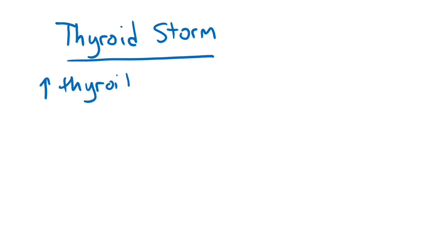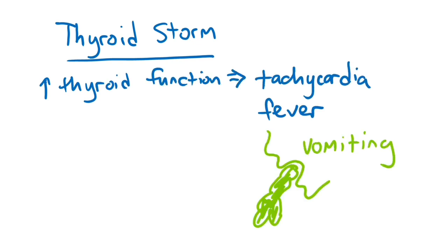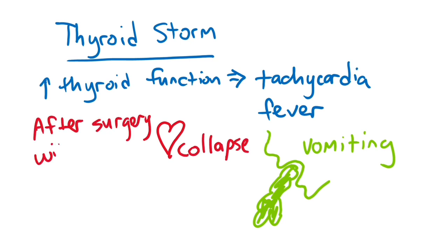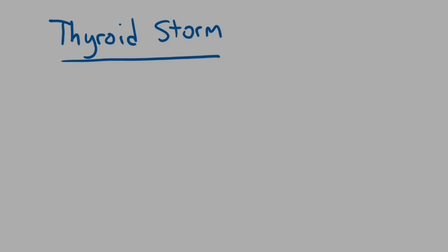Thyroid storm is an extremely rapid excess of thyroid function causing tachycardia, fever, vomiting, and the patient can be at risk of cardiovascular collapse due to stimulation of the heart. This can occur after surgery in somebody with undiagnosed Graves' disease.